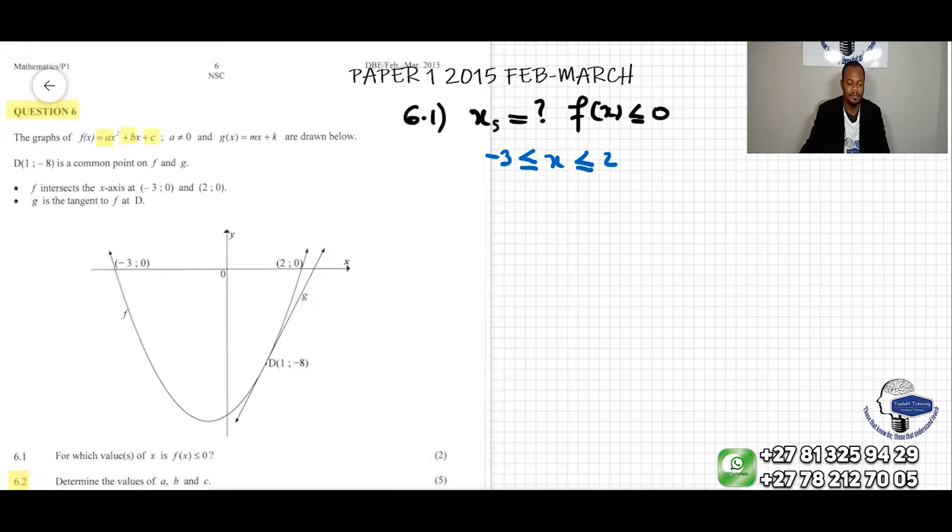This equation here is the equation of a quadratic equation. In 6.2, we're looking for the value of A, of B, and also of C.